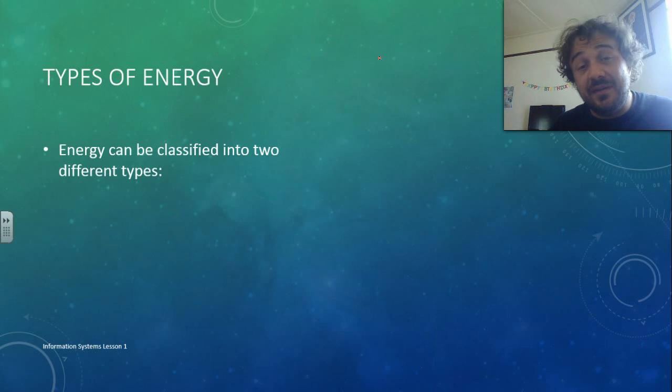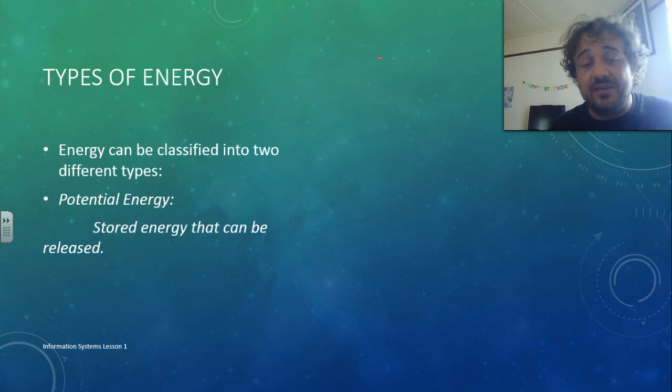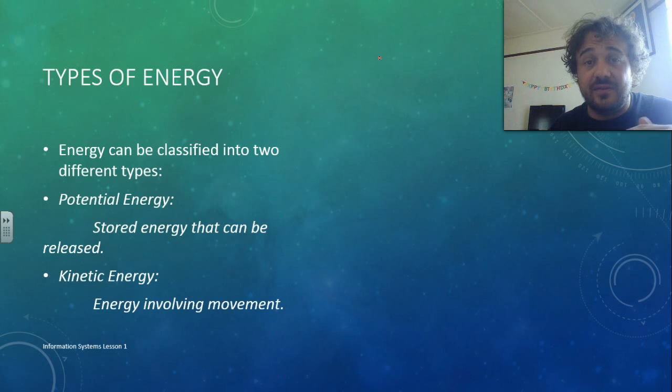So types of energy, you can basically classify it in two different types. We can have potential energy, which is stored energy that can be released, or kinetic energy, which is energy of a moving object. So energy involves movement now, that includes heat, so when something's heating up, all the particles are moving more and more, that's kinetic energy.